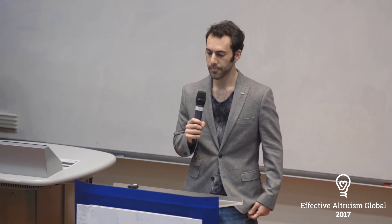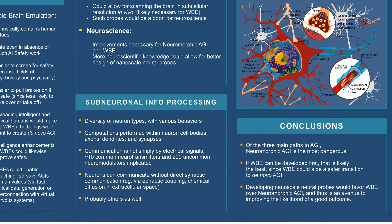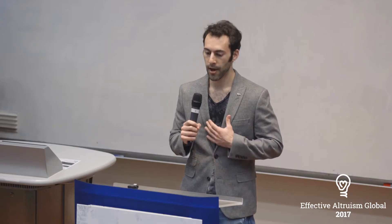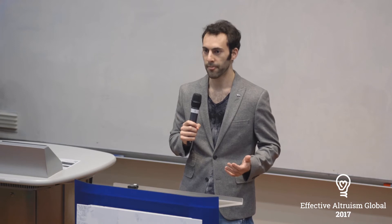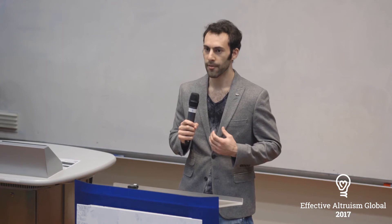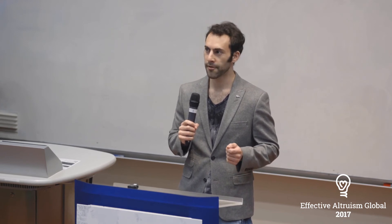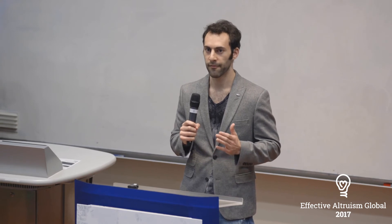Previous work, in particular by Nick Bostrom, has argued that neuromorphic AGI is the least safe of the three, and whether de novo AGI or whole brain emulation would be safer is an open question with arguments on both sides. In my work, I came to the conclusion that whole brain emulation would be safer to achieve first. However, there is a caveat: pursuing whole brain emulation might actually lead to getting neuromorphic AGI first — so if we pursue what is arguably the safest path, we might end up with the least safe outcome. As it stands today, the vast majority of work is not directly pursuing one path but instead focusing on underlying technologies, so we have to consider each technology separately.